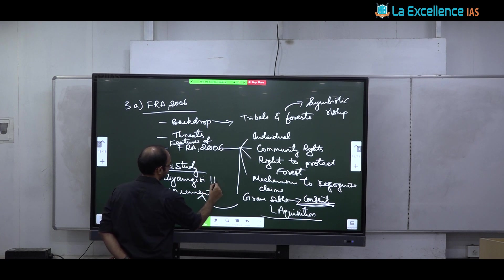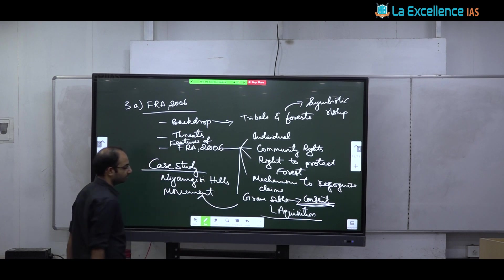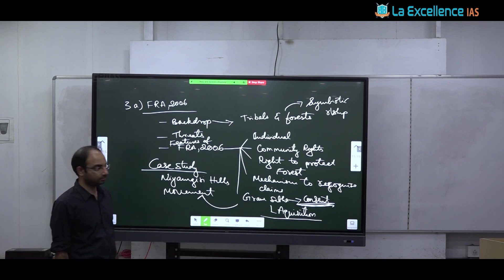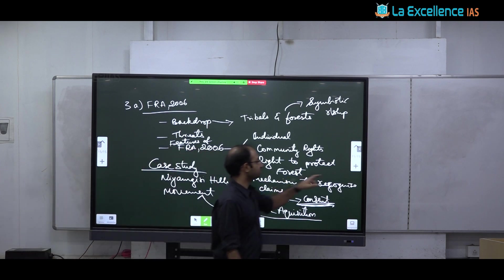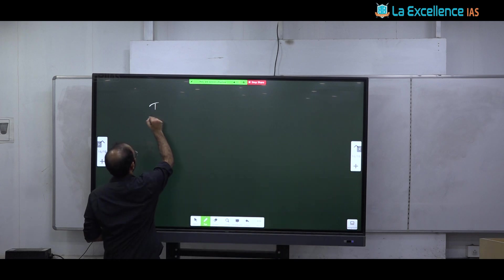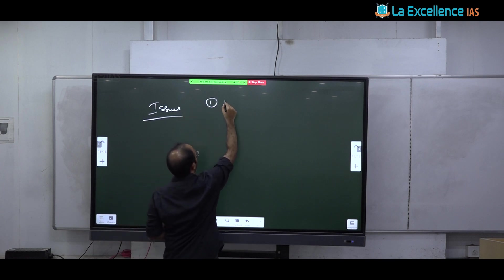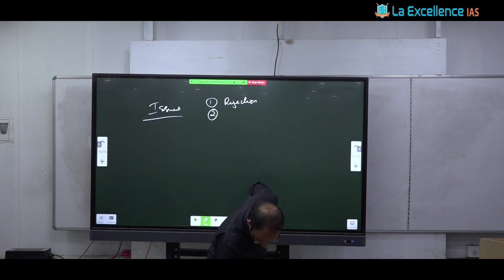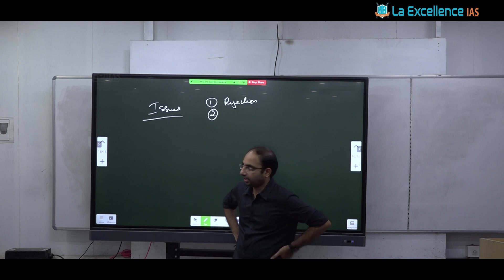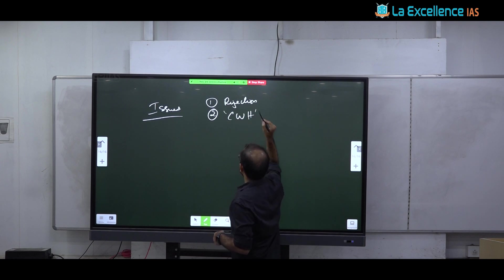And this right is not at all implemented. Many do not even know that they have this right. And then things like, while individual rights are enforced, community rights are violated. Because community rights are difficult to enforce. So community rights are not implemented. And rights of women are also ignored, rights of women are also ignored. And consent is forged, is forged or is forced. You can give the example of Polovarum dam here.